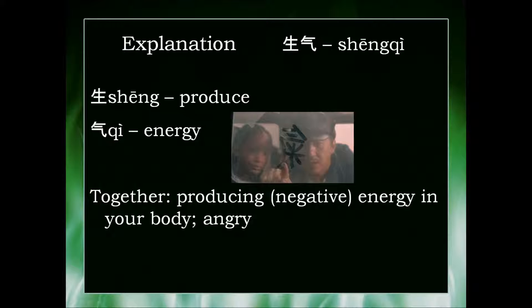If you've seen the Jackie Chan and Jaden Smith Karate Kid movie, there's a train scene where he explains that they're learning about 气. This is just a picture from it — he actually draws the character 气 in traditional Chinese. This is the simplified character.